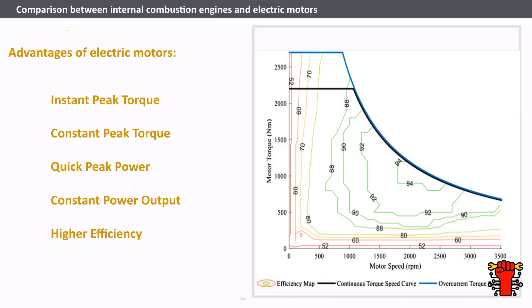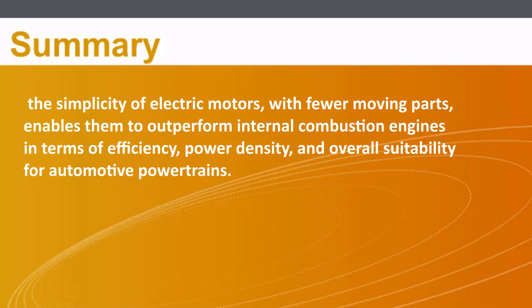Higher efficiency: electric motors consistently operate at higher efficiency, reaching levels of 96 to 98 percent in advanced electric vehicles. In essence, the simplicity of electric motors — with fewer moving parts — enables them to outperform internal combustion engines in terms of efficiency, power density, and overall suitability for automotive powertrains.